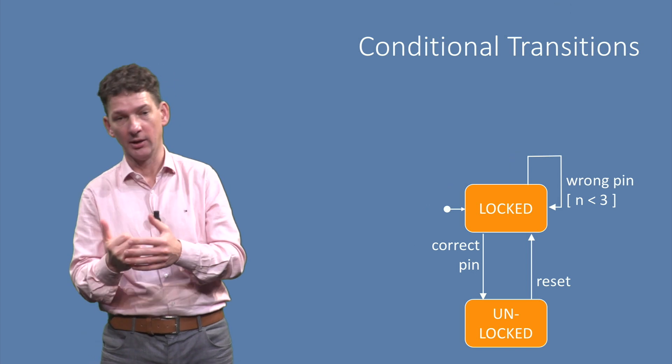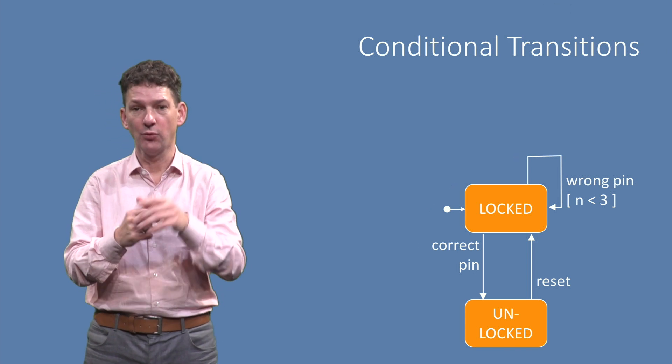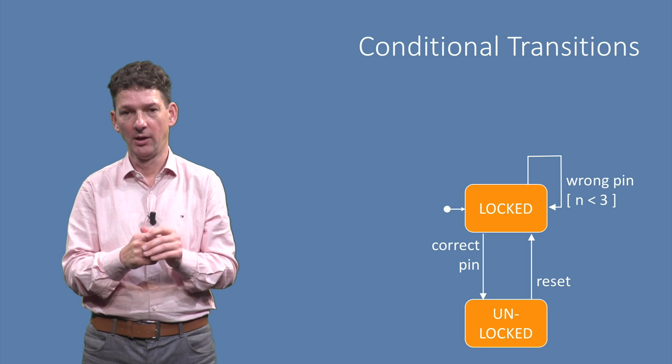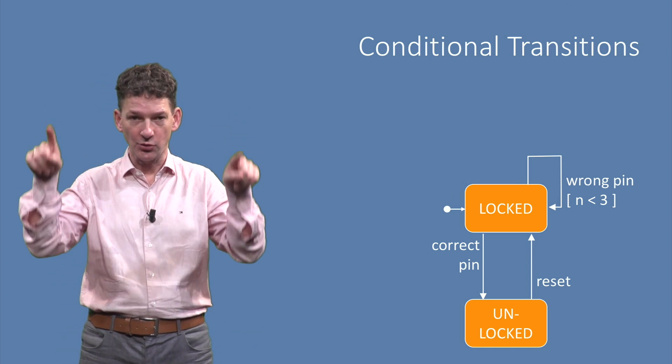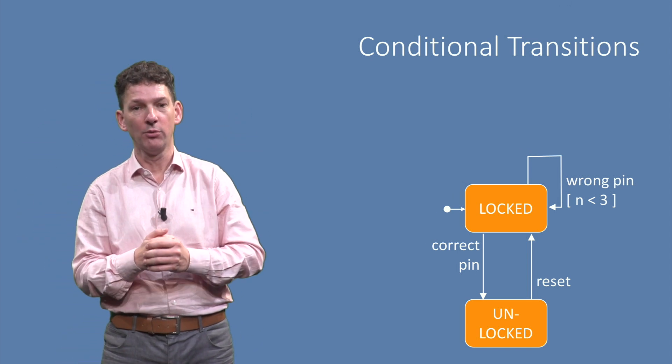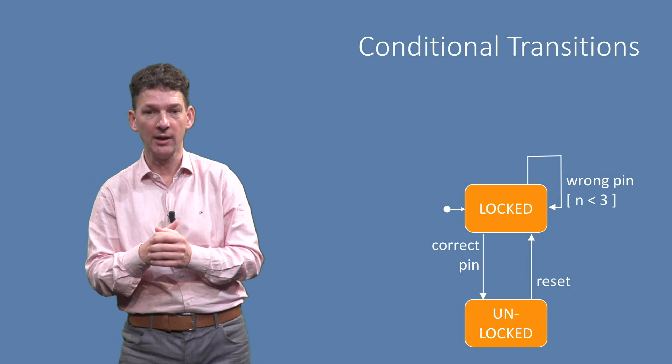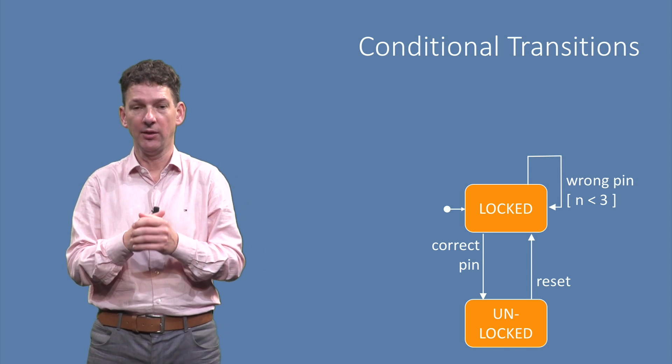An example is shown here, for the self-transition with the wrong pin code. The condition, written between square brackets, states that the number of attempts, denoted by n here, should be less than three.